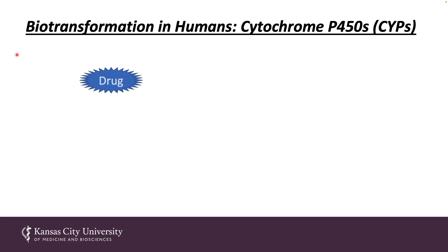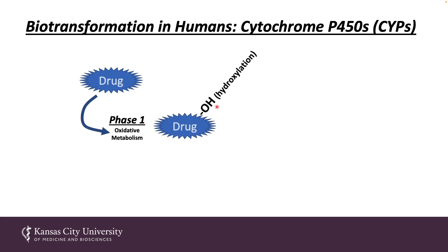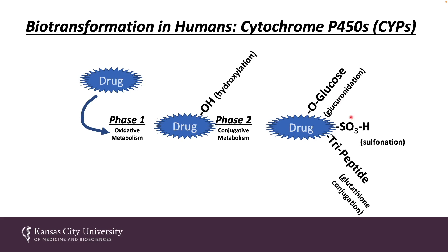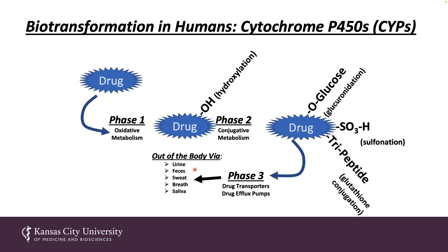Here is a pictorial representation of the biotransformation pathways in humans through cytochrome P450 enzymes. Physicians prescribe and pharmacists dispense the drug, which goes through phase one oxidative metabolism to produce a hydroxylated form. These hydroxylation reactions form the active site for phase two conjugated metabolism, including glucuronidation, sulfonation, or glutathione conjugation. Phase three reactions encompass drug transporter enzymes and drug efflux pumps — how compounds exit the body via urine, feces, sweat, breath, and saliva. Overall, biotransformation converts a fat-soluble compound into a water-soluble compound that can be excreted.